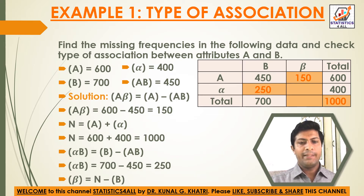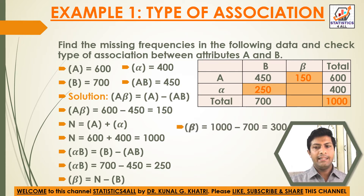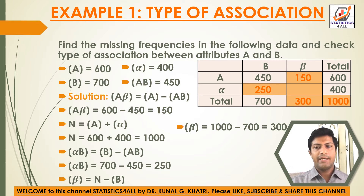Now beta is equal to N minus B. Here N is equal to 1000 and B is equal to 700, so beta is equal to 1000 minus 700, which equals 300.